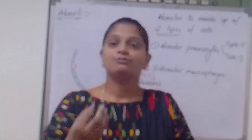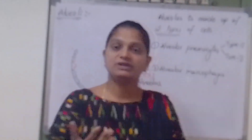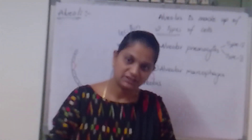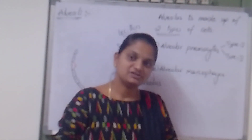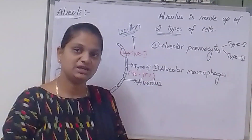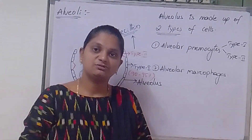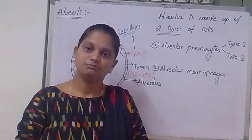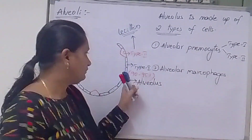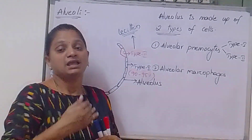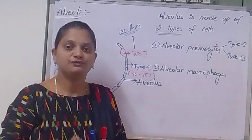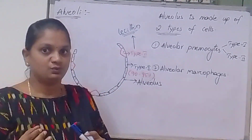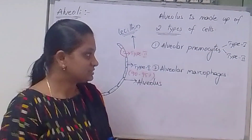If Type 1 pneumocytes are damaged, we can face difficulty in breathing, because Type 1 pneumocytes are functionally responsible for the exchange of gases between alveoli and blood. If these cells are lost, breathing is impaired. Type 2 pneumocytes have the capability to replicate and replace damaged Type 1 pneumocytes.